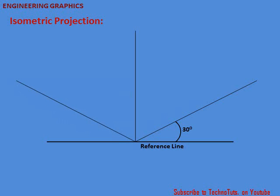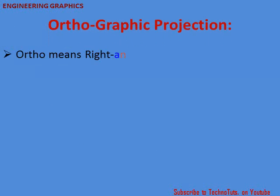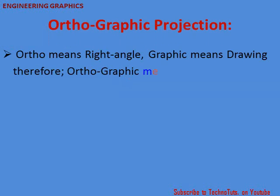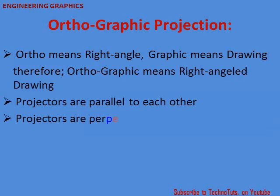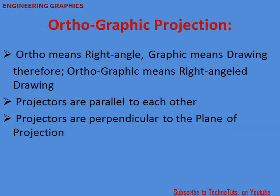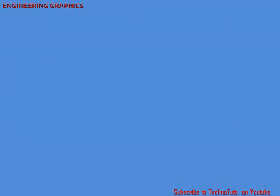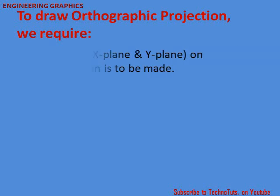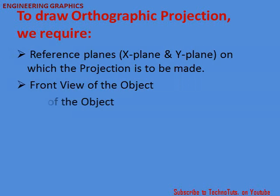Any one plane can be selected as the XY plane, another as the YZ plane, and the other as the XZ plane. Orthographic projection — ortho means right angle and graphics means drawing, so orthographic means a right-angle drawing. In orthographic projection, projectors are parallel to each other and perpendicular to the plane of projection. To draw the orthographic position we require reference planes, that is the X plane and Y plane, on which the position has to be made.